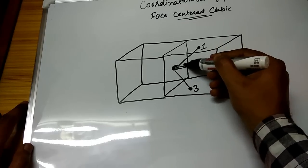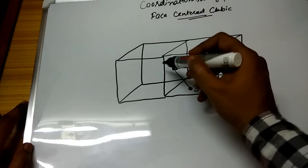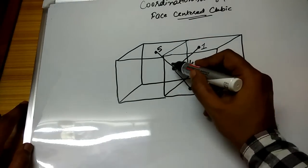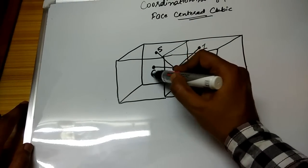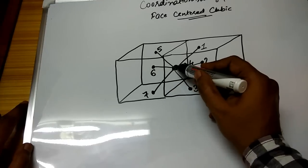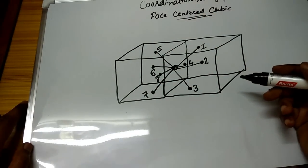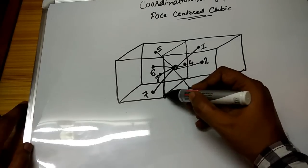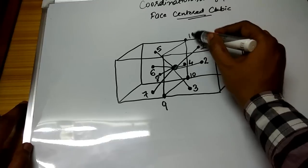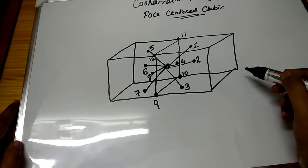This front surface is number four. On the other side we have this upper surface, number five; this backward surface, number six; this lower surface, number seven; and this front surface, number eight. Then this one is nine, this one is ten, this one is eleven, and this last one is twelve.